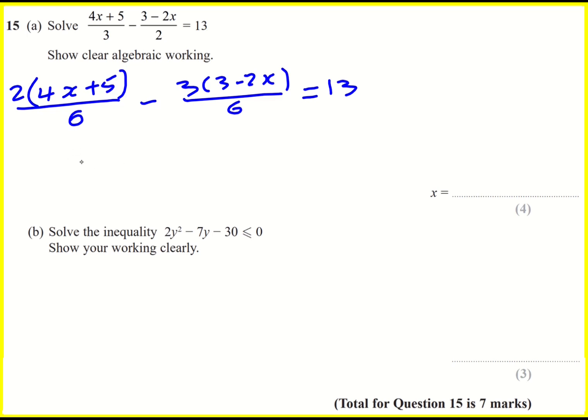And then you can either bring it together, which I think I will do. I'm going to multiply the brackets out as well. So 8x plus 10 minus, let me put the brackets in first. I'll do this in stages, all over 6 equals 13.